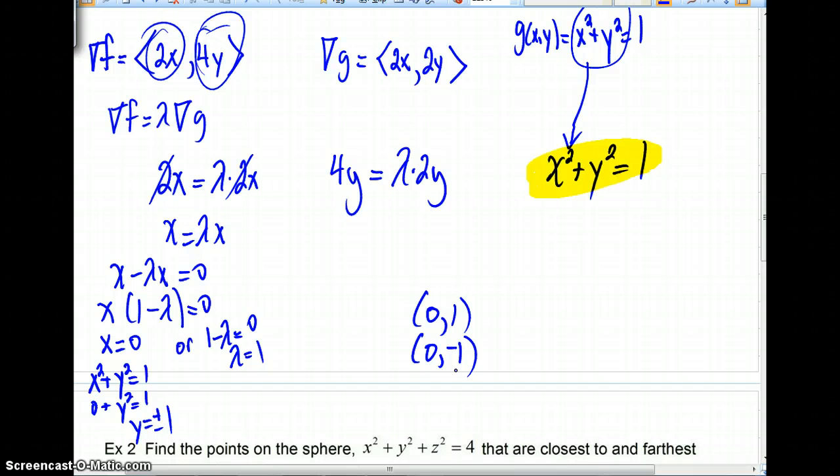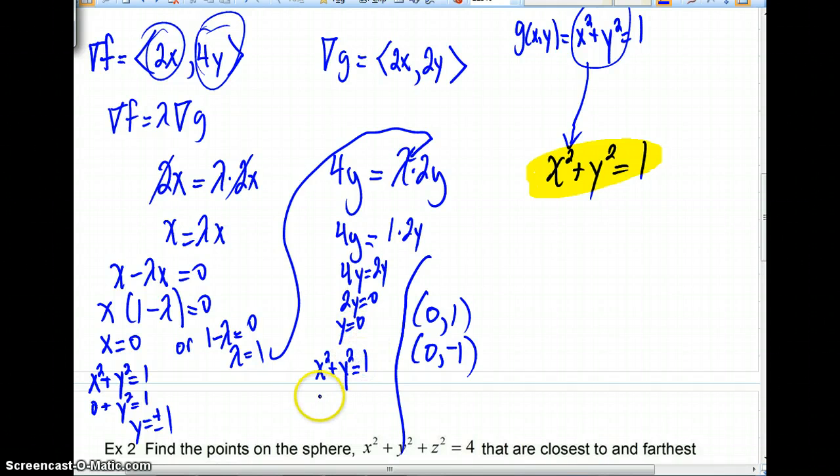Well, we also had the situation where lambda was equal to 1. Well, now, if lambda was equal to 1, we could actually substitute that into our other equation here to get 4y is equal to 1 times 2y. But very quickly, we can see if we subtract 2y from both sides, that y would equal 0. Well, again, we could go back to x squared plus y squared equals 1 and see x squared plus 0 is equal to 1. That would yield x is plus or minus 1. So, we would get the following additional answers of 1, 0 or negative 1, 0. So, these are all of our critical numbers.